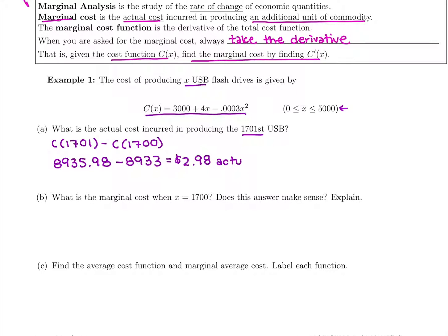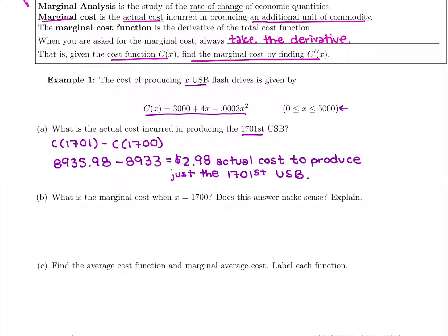That $2.98 is the actual cost to produce just the 1,701st USB. Remember, all 1,701 would cost almost $9,000, but that individual one costs $2.98. If they're selling USBs for $2, production is too costly. But if they're selling for $15 and it only costs an extra $2.98 to bump production up by one, they should do it.